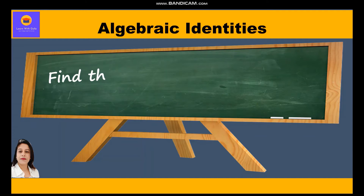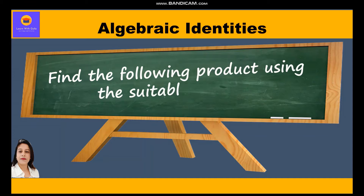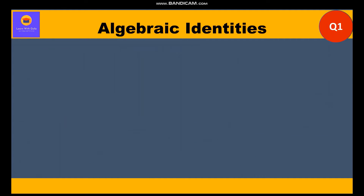The question is: find the following products using a suitable identity. In all these parts, the factors are given to us and we have to find the product using the suitable identity.